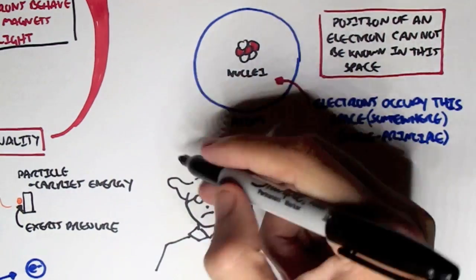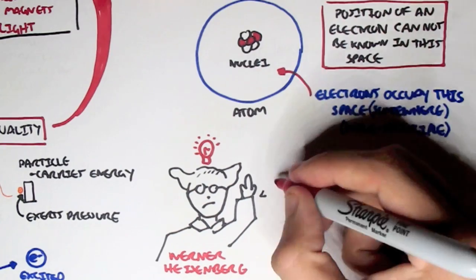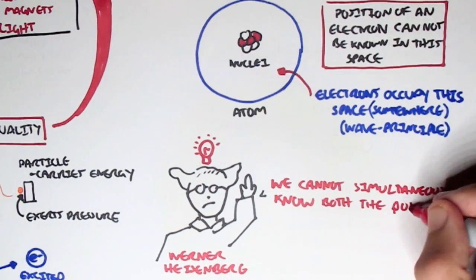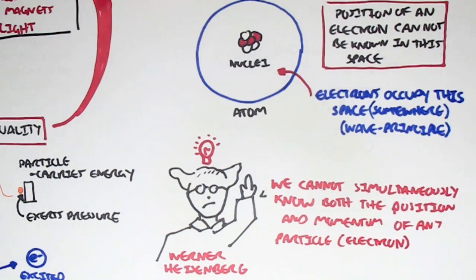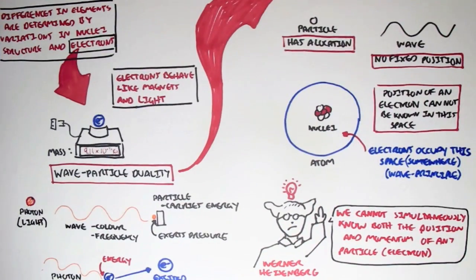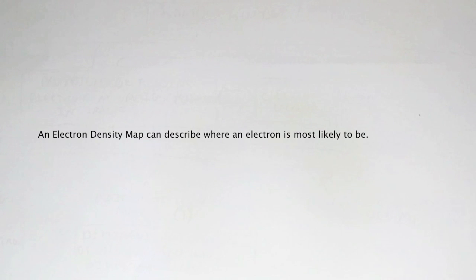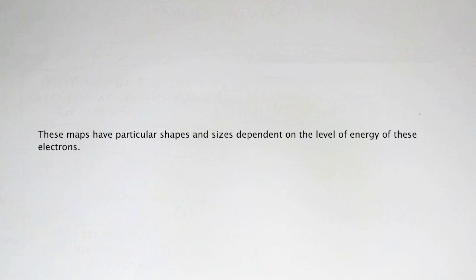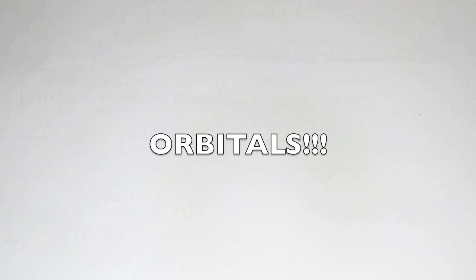This is where Werner Heisenberg comes in, with the uncertainty principle. He says that we cannot simultaneously know both the position and the momentum of any particle or electron. So essentially, if we know the position of a moving electron or particle, there is uncertainty in knowing its velocity, and vice versa. We cannot know the position and the momentum simultaneously for an electron, and this is why it has this wave principle. However, an electron density map can describe where an electron is most likely to be. These maps have particular shapes and sizes dependent on the level of energy of these electrons, and these shapes and sizes are known as electron orbitals.